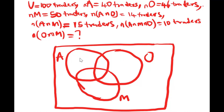In this Venn diagram, here is where we write the number of traders that sell apple only, this place is for orange only, and here is for mango only. This place is apple intersection mango, here is orange intersection mango, this place is apple intersection orange, and in the small space where all three sets intersect is where we put the number that sell all three. You can watch our video on the concept of Venn diagrams for a proper understanding. To fill in our parameters, we start with the three-way intersection, which is 10.